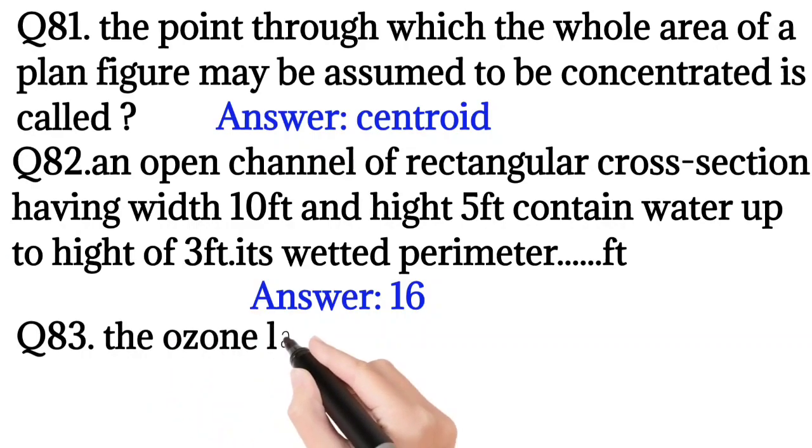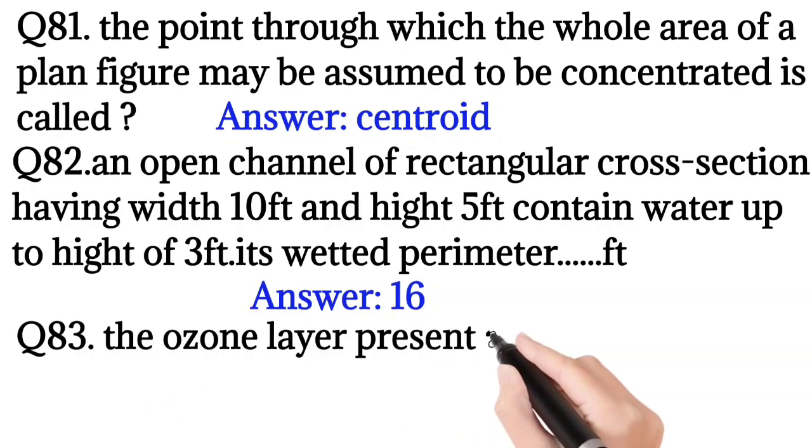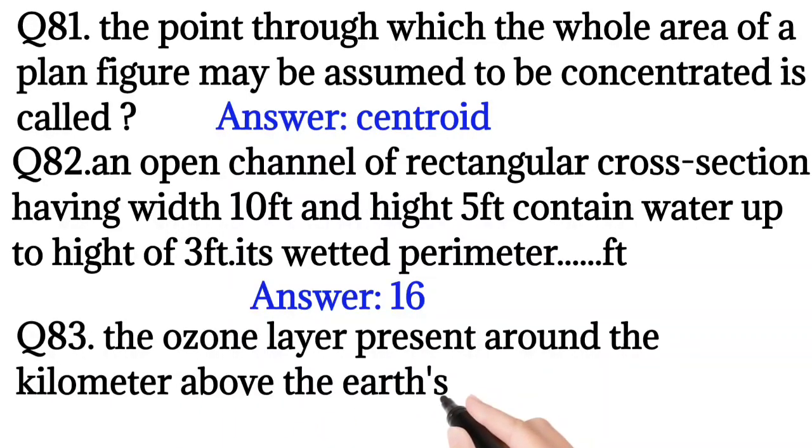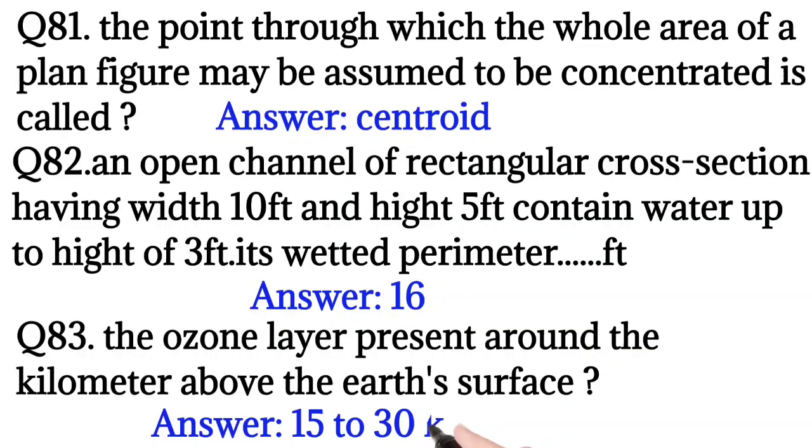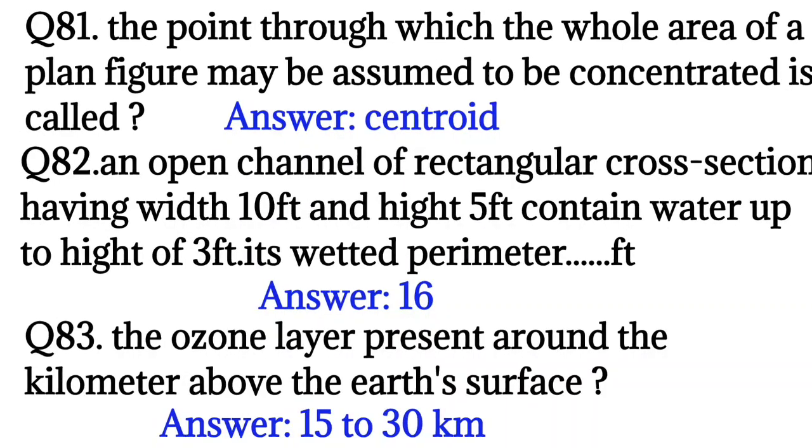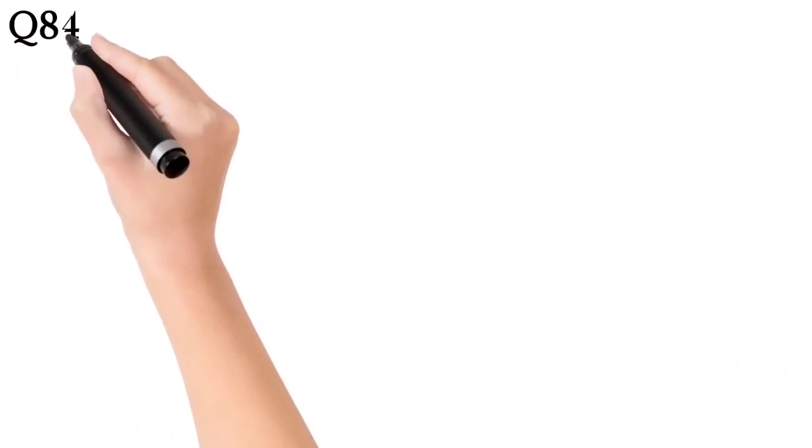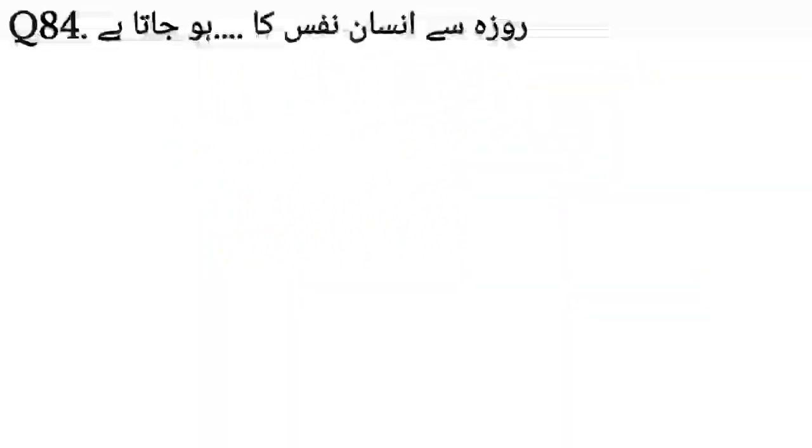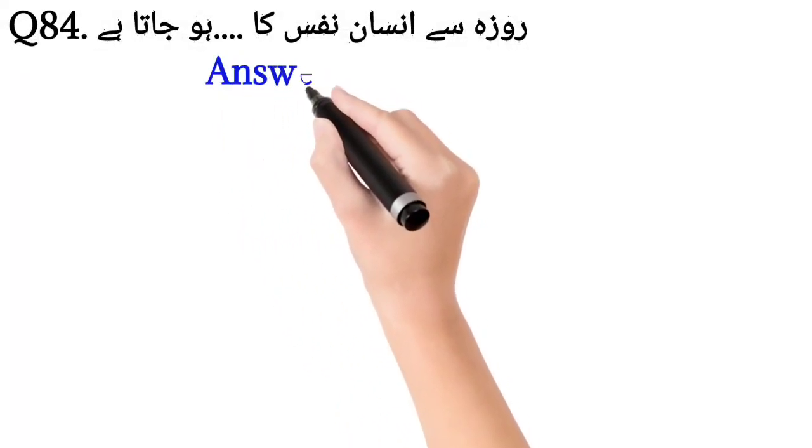Question number 83: The ozone layer is present around how many kilometers above the earth's surface? Answer: 15 to 30 kilometers. Question number 84: Answer is discolor.